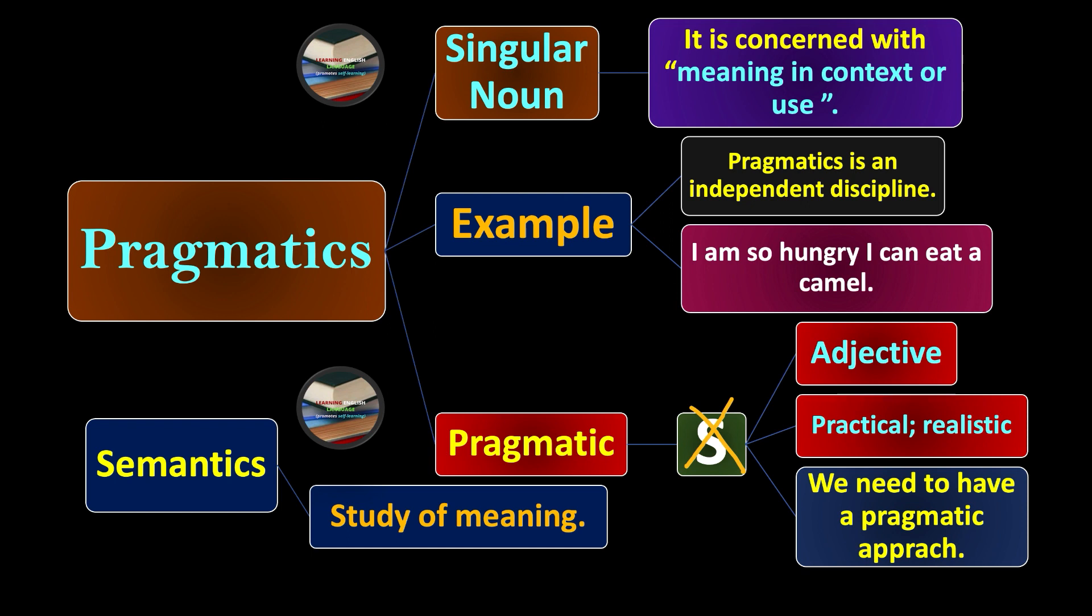That's it. But pragmatics goes one step beyond and interprets meaning in the context in which it was used. For example, if I say 'I'm so hungry I can eat a camel,' from the point of view of semantics, I will see how a person can eat a camel.